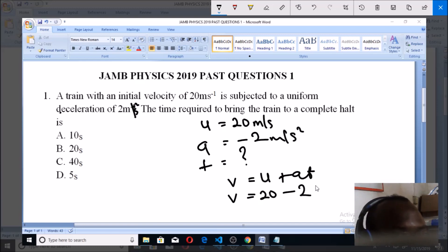Plus a, but because the acceleration is deceleration, it will now be minus 2 instead of plus 2, then t is what you're looking for. Now what is v, the final velocity? Whenever you're told that the car was brought to a halt, that means the final velocity is zero. So you have 0 equals 20 minus 2t.